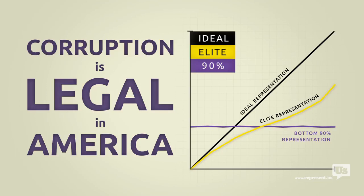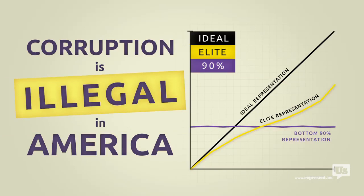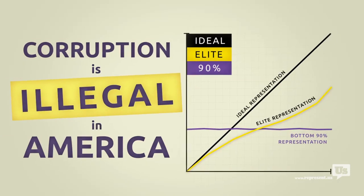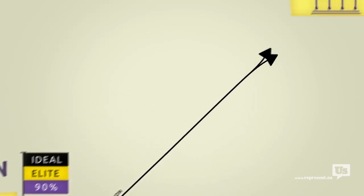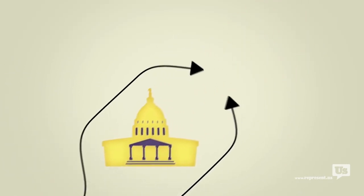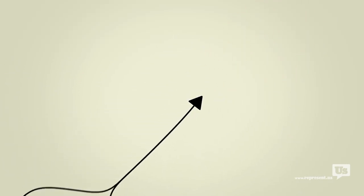The solution here isn't rocket science. Make corruption illegal. We already know Congress won't do it. I mean, one look at this chart will tell you that. What we need is a plan that lets us go around Congress and do what the American people do best: fix this mess ourselves.